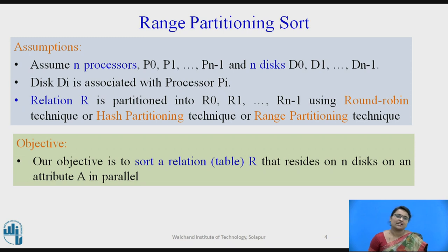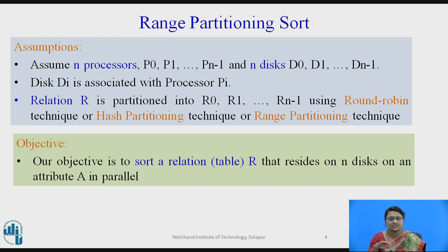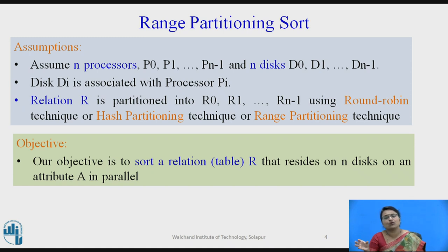The objective of range partitioning sort is that whatever the given relation R is, residing and partitioned on n disks, we want to sort it on a particular attribute A. For example, if we want to sort a table of student records by roll number, then attribute A is roll number, and we want to sort on that.